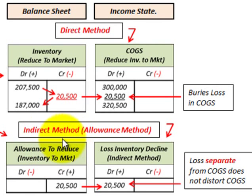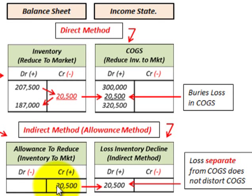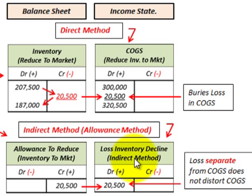With the allowance method, you set up a contra asset account called 'allowance to reduce inventory to market.' You credit or increase this allowance account by $20,500, which, as a contra asset, reduces your inventory account by that amount. The debit of $20,500 goes to 'loss on inventory decline' on the income statement, increasing that loss account.